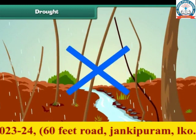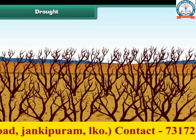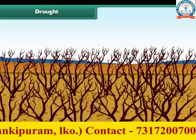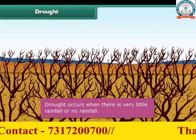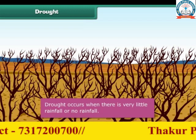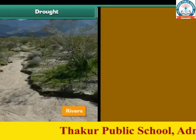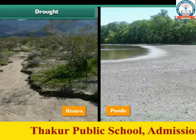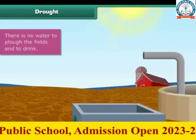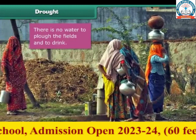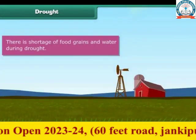Now we understand that floods occur due to heavy rainfall. So what happens when there is no rainfall? It will lead to another kind of natural disaster known as drought. Drought occurs when there is very little rainfall or no rainfall at all. During droughts, rivers, ponds, wells and other water resources dry up. There is no water to plough the fields, drinking water is hardly available, and there is a shortage of food grains.